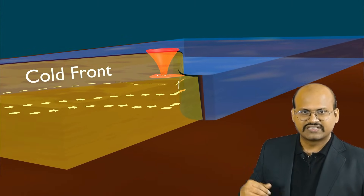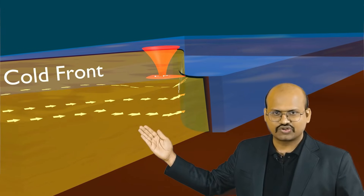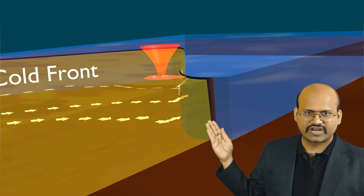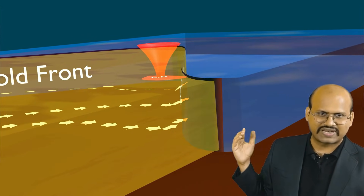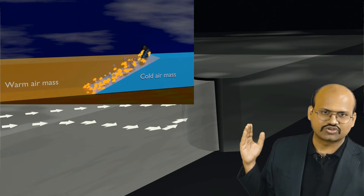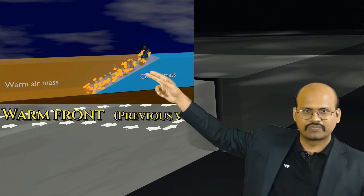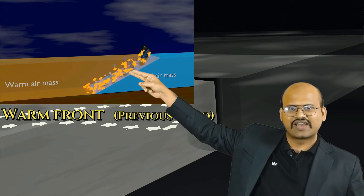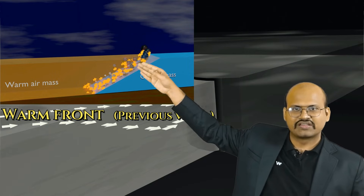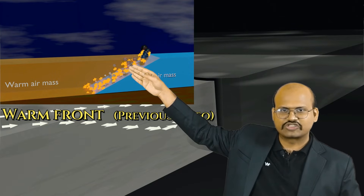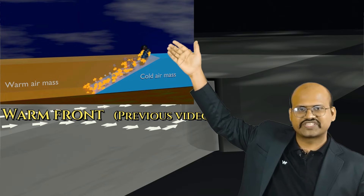As we have already seen in our warm front discussion, this warm air — which is trying to move the cold air — is lighter, so it is not able to directly push the cold air. Instead it forms a slope. This is the warm front, and we see a slope-like structure.